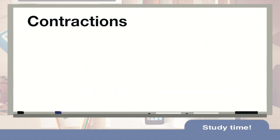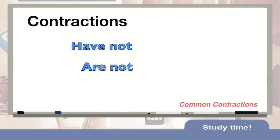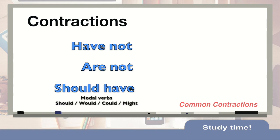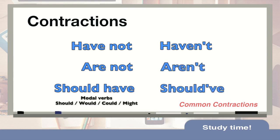Now, let's take a look at some common contractions that are often used in native English language. Verbs that are joined with 'not' are very commonly contracted. But also, modal verbs, which are words such as would, should, could, might, must, are also contracted very commonly. Have not becomes haven't. Are not becomes aren't. And should have becomes should've.